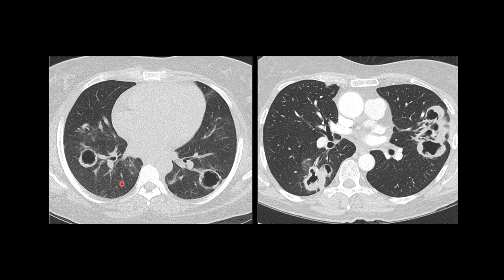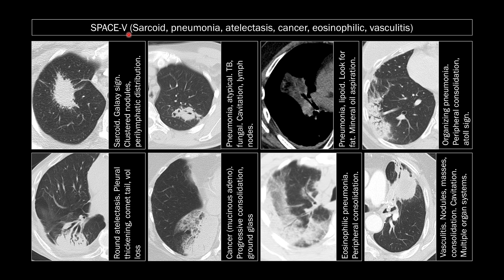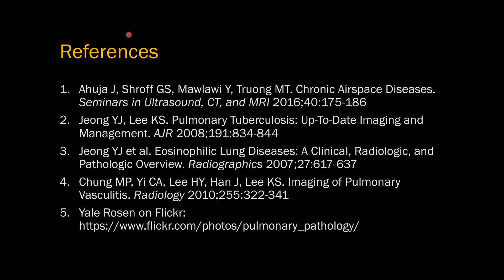Here are two other GPA patients showing nodules or masses with cavitation. To summarize: if you see a chronic consolidation, use the SPACE V mnemonic — sarcoid, pneumonia, atelectasis, cancer, eosinophilic pneumonia, and vasculitis. Remember there are three entities under P: atypical pneumonia, lipoid pneumonia, and organizing pneumonia.